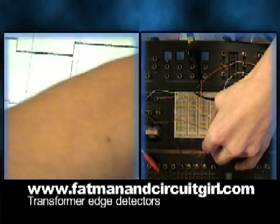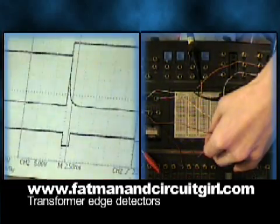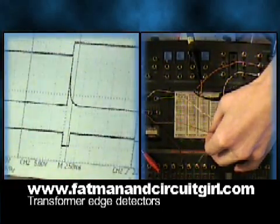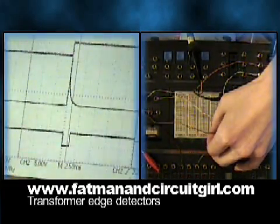I can zoom in a little bit here. You can see we get a single negative pulse each time the magnetic field collapses from this transformer.